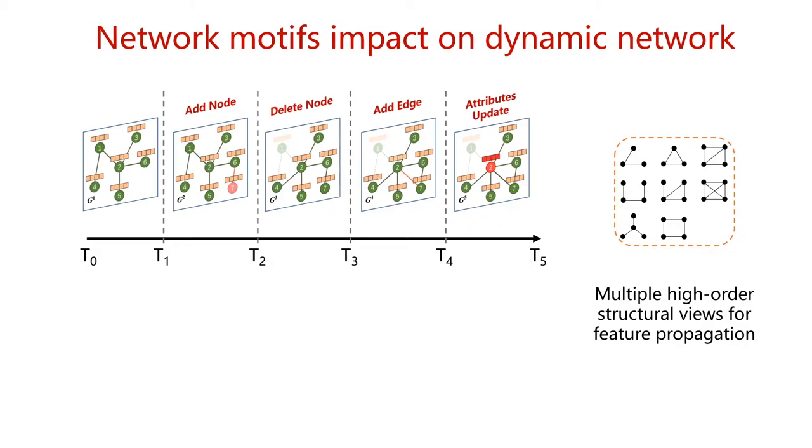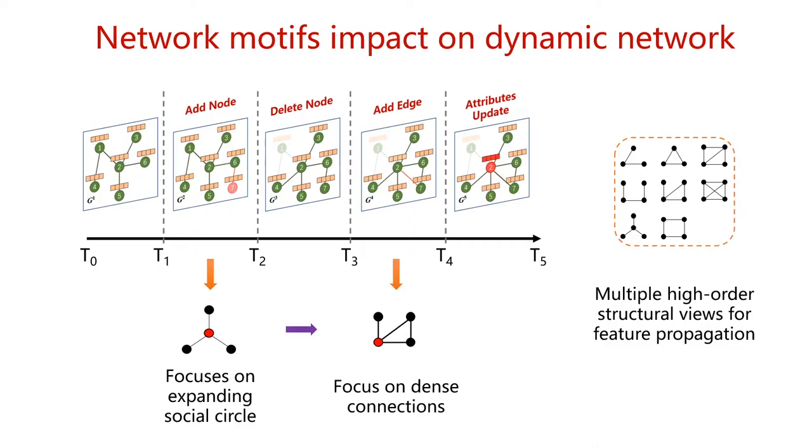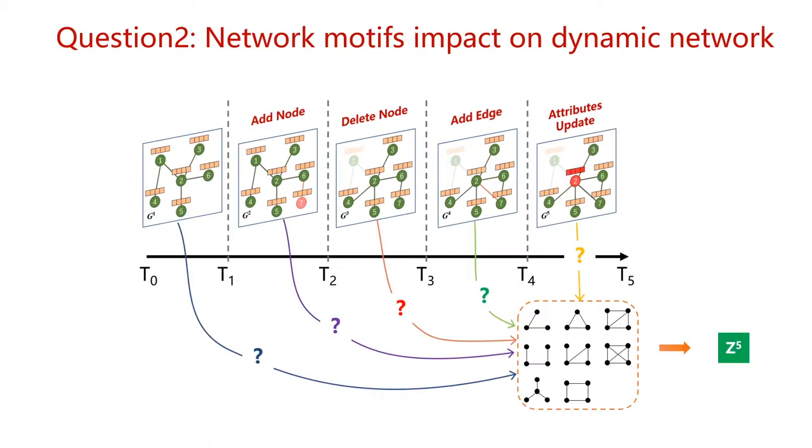Different types of network motifs can be seen as different perspectives of feature propagation. Nodes may tend to interact in different ways at different times. For example, some red nodes initially focused on expanding its social circle and then gradually pursued more intimate social relationships.